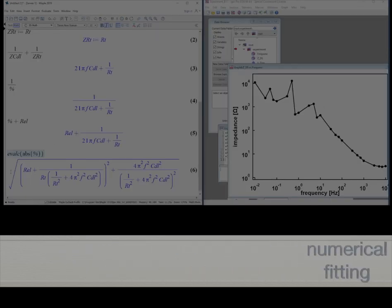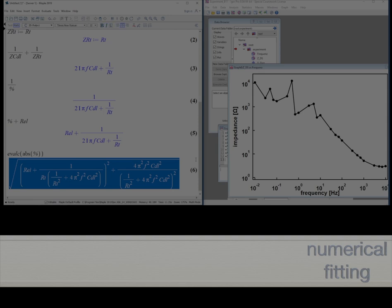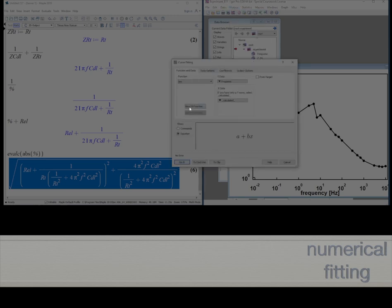Now we put the windows of Maple and Igor side by side on our desktop. Then we carefully copy and mark the result of Maple calculus. Then go to Analysis in the Igor dialog, go to curve fitting, and then we introduce a new fit function. We call it, for example, bode_fit. Now we go to the function and press ctrl V. There's the result of Maple in Igor. That's fine.